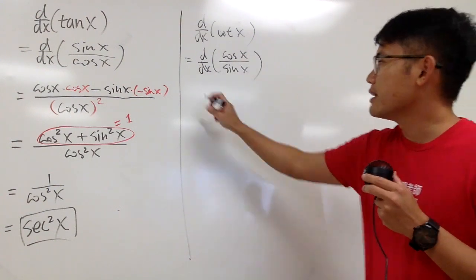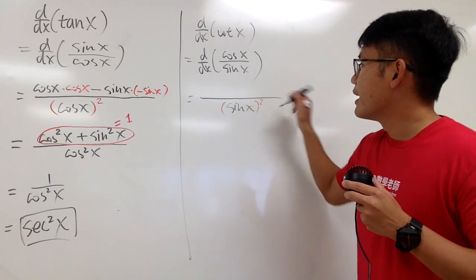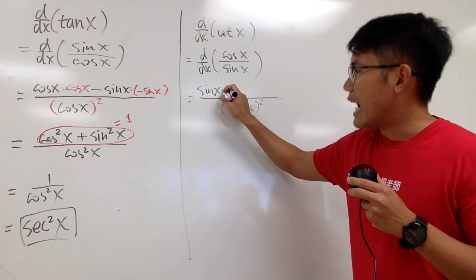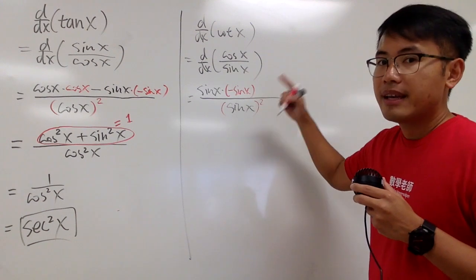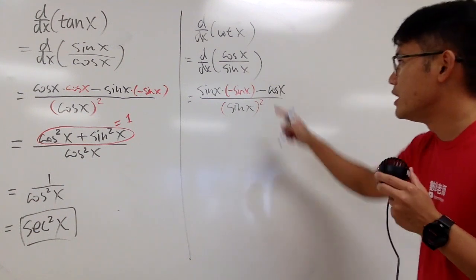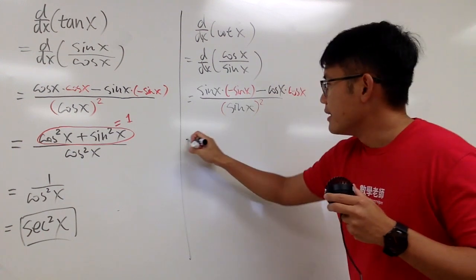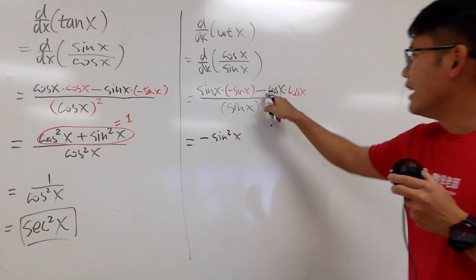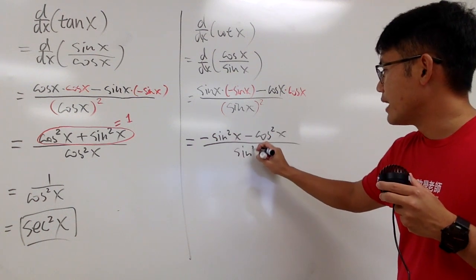Let's do the quotient rule again. I have to square the denominator, which is sine x squared. Then we bring the bottom, sine x, to the top and multiply by the derivative of the top function. The derivative of cosine x is negative sine x. Then we minus the top function, cosine x, and multiply by the derivative of the bottom. The derivative of sine x is cosine x. Here we have sine x times negative sine x, giving negative sine squared x, minus cosine squared x, all over sine squared x.